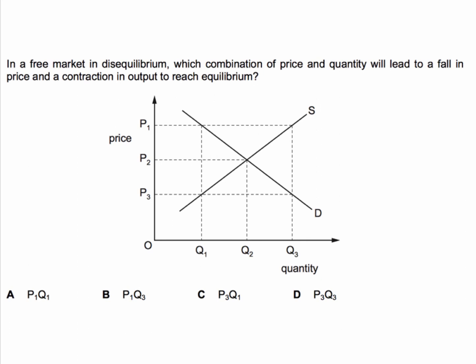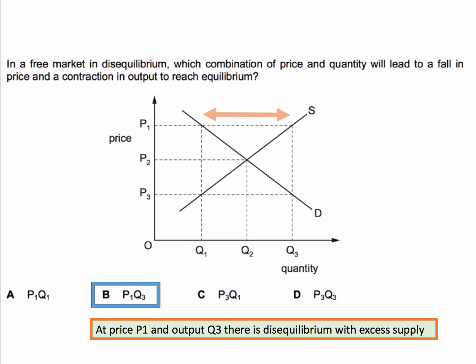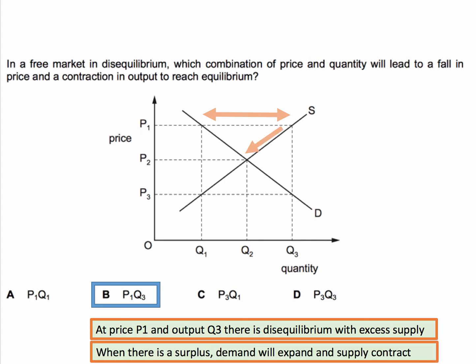The correct answer is B. P1Q3 is a disequilibrium, and at that price — at P1 — there is excess supply in the market, so therefore that's a surplus. With a disequilibrium with excess supply, there is a fall in the price, which causes demand to expand from Q1 to Q2, but supply to contract from Q3 to Q2 back towards the equilibrium P2Q2. So the answer to this question is B, P1Q3.